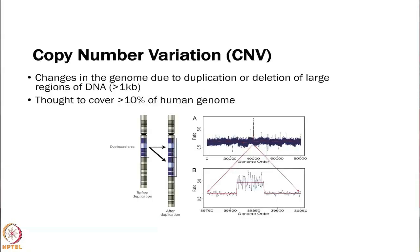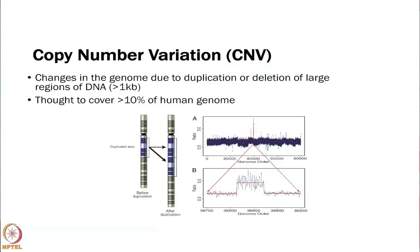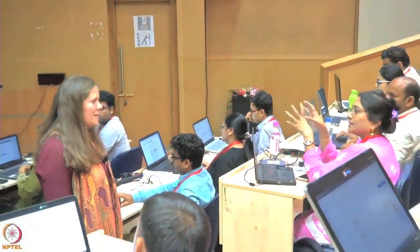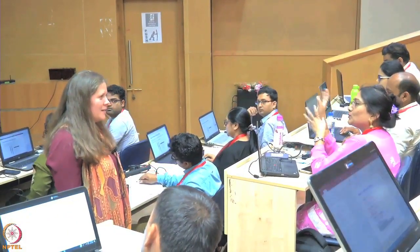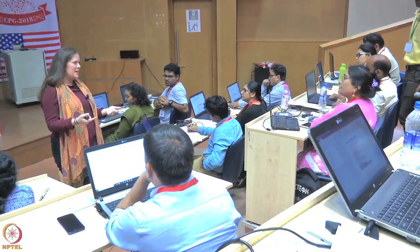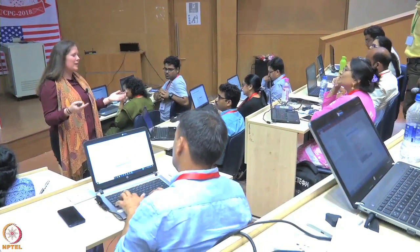Copy number variation is looking at changes in the genome due to duplication or deletion of large regions of DNA. This also often occurs in cancer, so it is something we pay a lot of attention to and use whole genome or whole exome sequencing to get information on. All of the projects I have worked on still include CNV in data analysis. If you are already doing whole genome or whole exome sequencing to get your SNPs, then why not do copy number as well — if you have the data, you are going to use it.